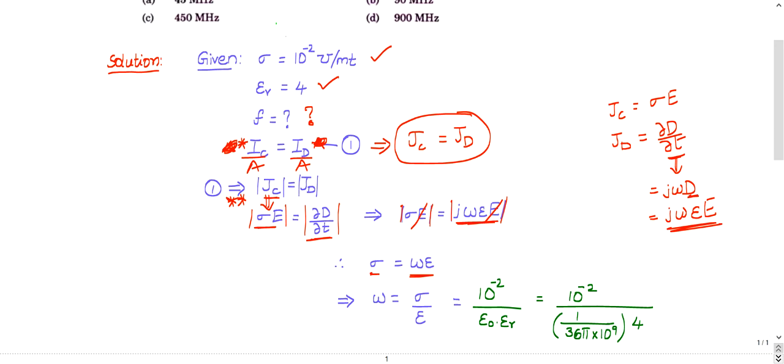Some people will remember, try to remember this. jc by jd, it's useful. The magnitude of this, you try to remember. It's nothing but sigma by omega epsilon. This is a general thing. To be specific, you remember this: jc by jd equal to sigma at an angle, sigma by omega epsilon at an angle minus 90. This is the magnitude part. This is the phase part.